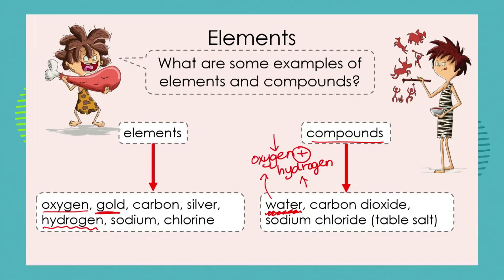Carbon is an element. But we could take oxygen, hydrogen, and carbon and bond them together chemically to form a new substance, which is a compound called carbon dioxide.